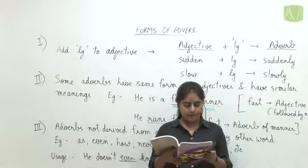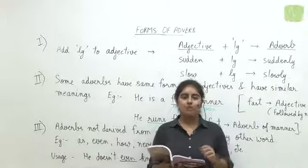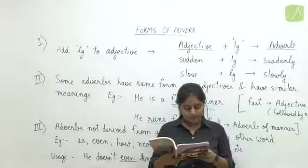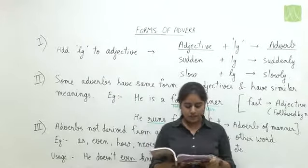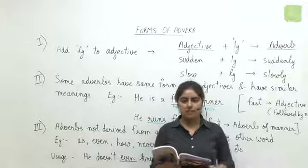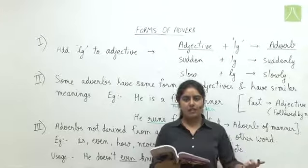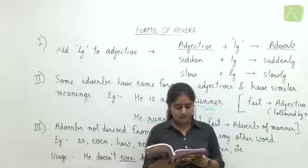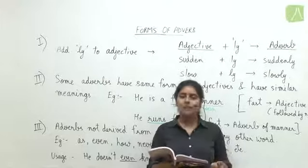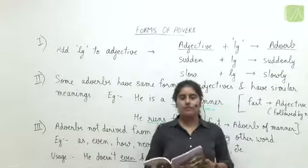Question twelve: 'No fewer than forty people were killed in an accident.' We use 'no fewer than' with countable nouns, and 'people' is a countable noun, so it is true. Question thirteen: 'She hit the key nearby' — correct sentence, true. Question fourteen: 'Herman easily lifted the cylinder' — true, because it tells the manner how he lifted it, easily. So all these sentences are true.